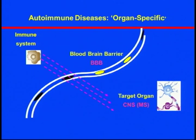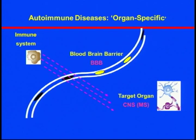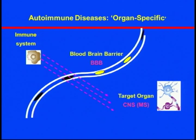MS is an autoimmune disease, which basically means your immune system acts up to target against your own body part. In diabetes, the pancreas is the prototype target organ. In MS, the brain and spinal cord — the central nervous system — is the target organ.